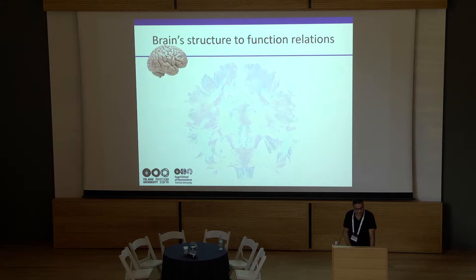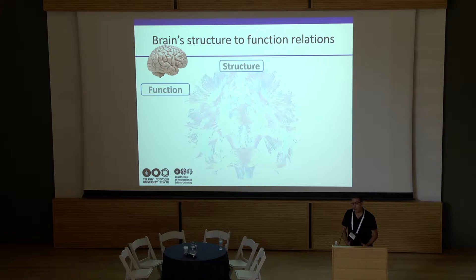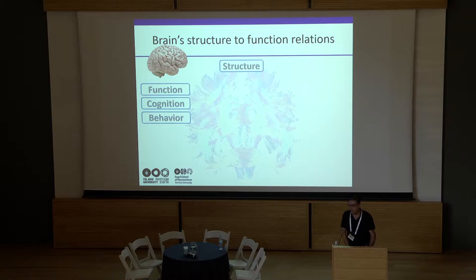We start with the holy grail in neuroscience: to understand the relation between the function and the structure of the brain. One practical reason is that it is easier non-invasively to measure the structure of the brain than the function. Therefore, if we can infer the relation between these two, we might be able to say much more about cognition and behavior. However, structure can exist at many scales in the brain — it's important which scales we are looking at.